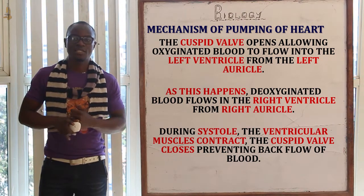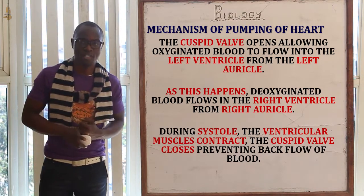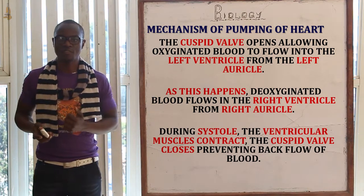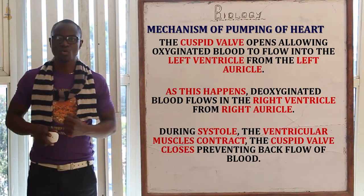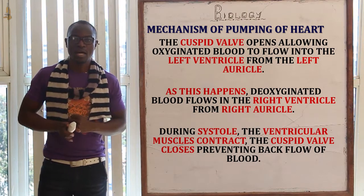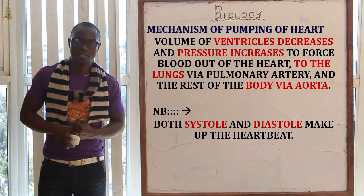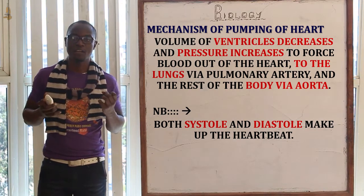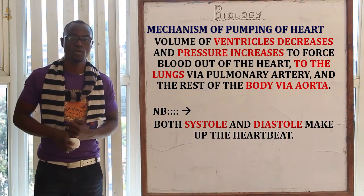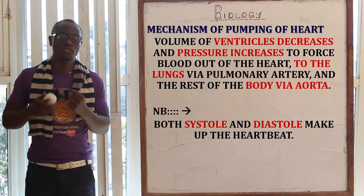Looking at the right side, the tricuspid valve will open to let blood flow into the right ventricle from the right auricle. During systole, the ventricular muscles — that is the left ventricle and the right ventricle — will contract. The tricuspid and the bicuspid valves will close as blood is forced out of the heart. The tricuspid and bicuspid valves close and the semilunar valves open to let blood flow out. The volume of the ventricles decreases and the pressure increases to force blood out of the heart.